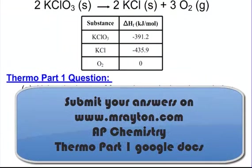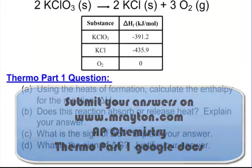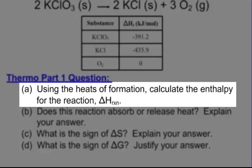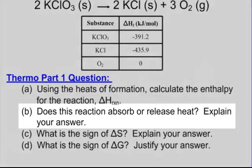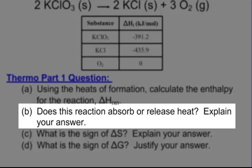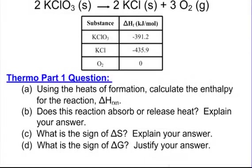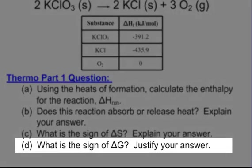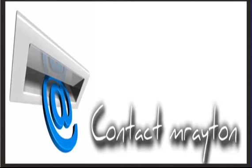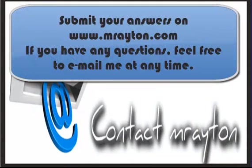The problem you're going to do is the potassium chlorate decomposition reaction. I've already balanced it for you and given you the heats of formation. Part A: using the heats of formation, calculate the enthalpy of the reaction. Part B: does this reaction absorb or release heat? Explain your answer. Part C: what is the sign of delta S? Explain your answer — a quick explanation is sufficient. Part D: what is the sign of delta G? Justify your answer. Write your work down on paper; you need to submit all three parts before the end of break.